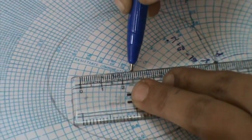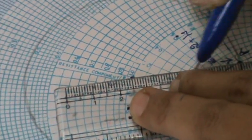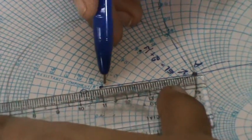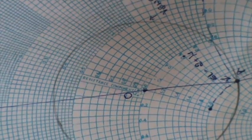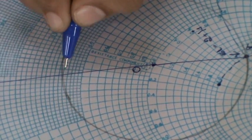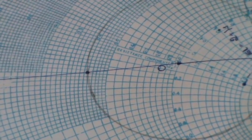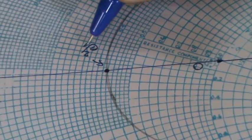In order to obtain admittance, let me extend this OA line so that it cuts the circle to the other side also. The point where this extended OA line cuts the VSWR circle gives you the load admittance.